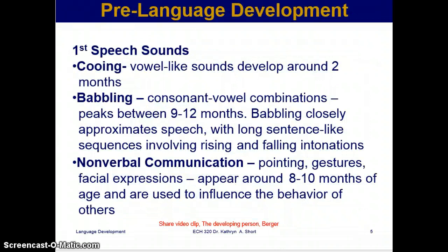Pre-language development: first speech sounds are cooing — vowel-like sounds that develop around two months. Then babbling, which is consonant-vowel combinations that peak between 9 to 12 months. Babbling closely approximates speech with long sentence-like sequences involving rising and falling intonation — like 'gaga goo-goo ba-ba boo-boo.'